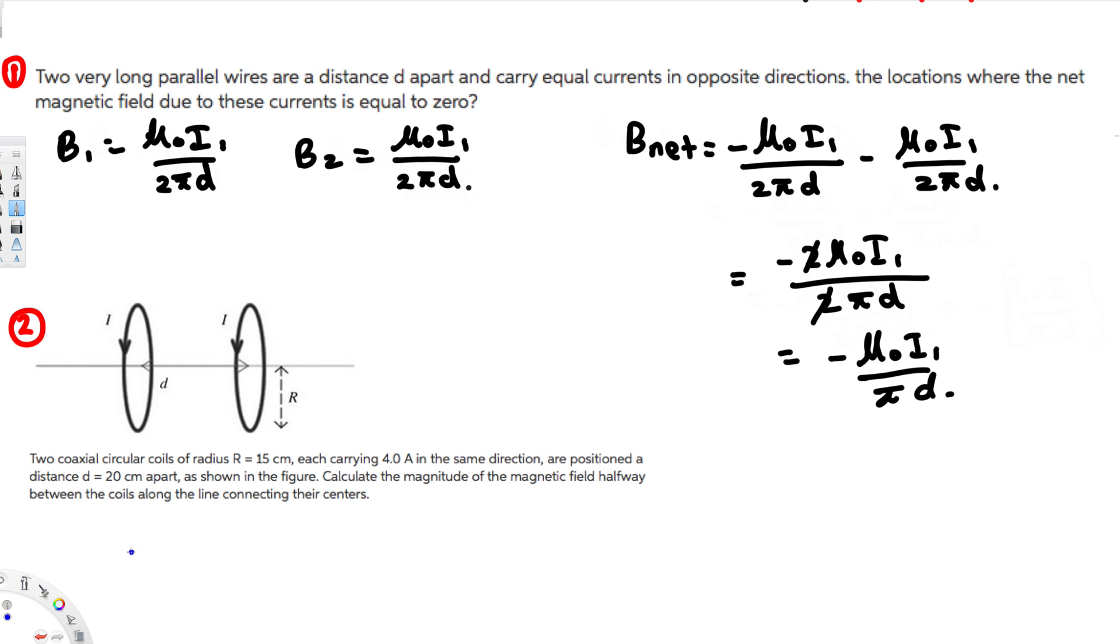To find this one, we have to use this equation: B equals 2μ₀Ir² over [(d/2)² plus r²] to the power of 3/2.